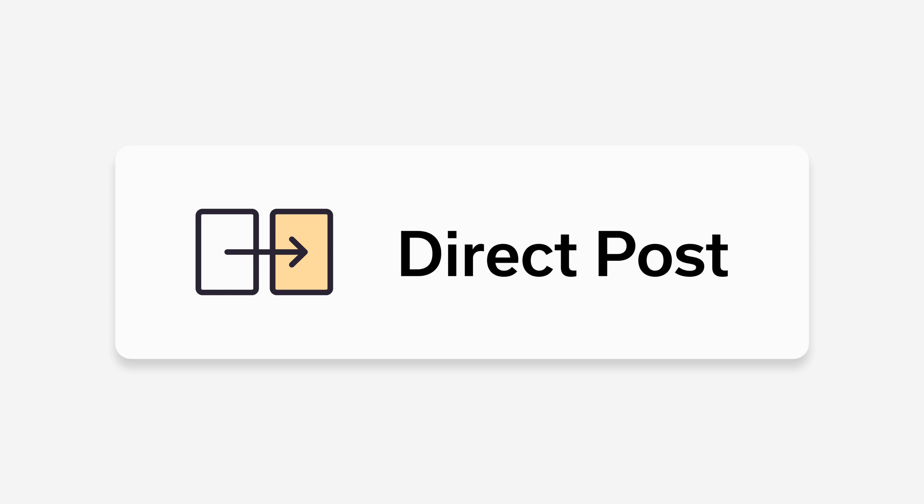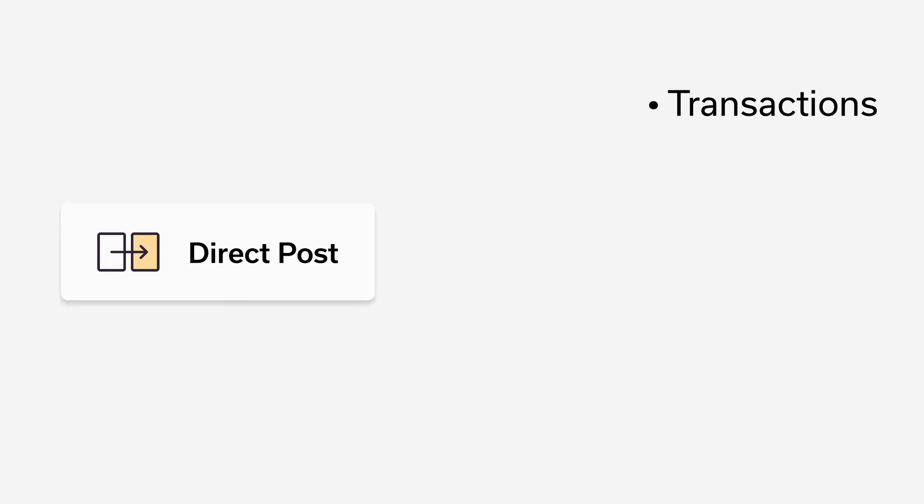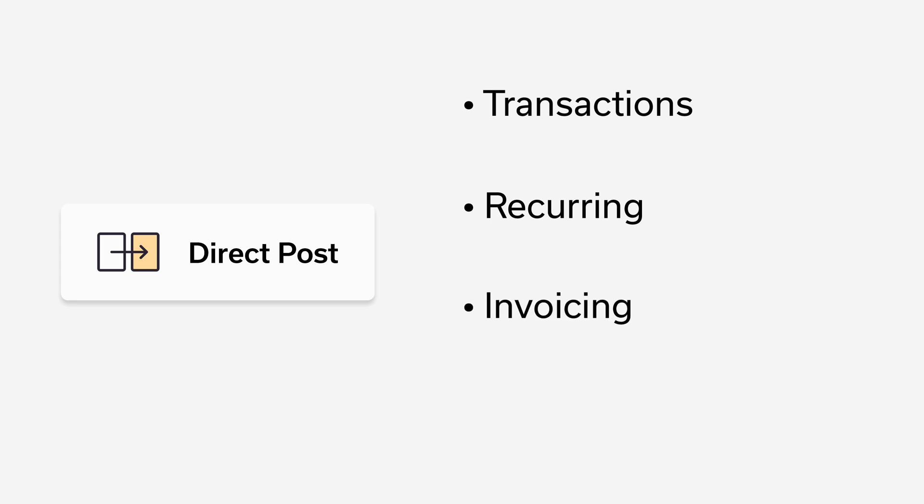Our primary API for this is what we call the Direct Post API, and this is a way to send transactions to the gateway. You can do transactions, you can access recurring, you can access invoicing, you can access the customer vault — basically everything that's in a merchant account can be done from the Direct Post API.